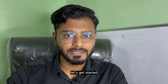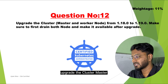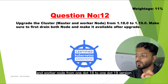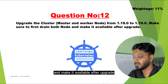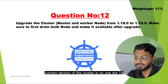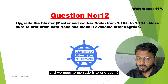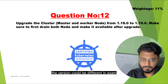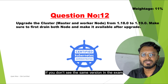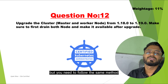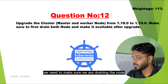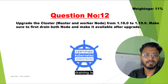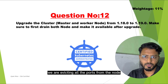Without wasting any time, let's get started. Here is the question: upgrade the cluster master and worker node from version 1.18 to 1.19, and make sure to first drain both nodes and make them available after the upgrade. The current version of the cluster is 1.18 and we need to upgrade it to 1.19. Before upgrading, we need to drain the node — draining means evicting all the pods from the node so that it is empty.